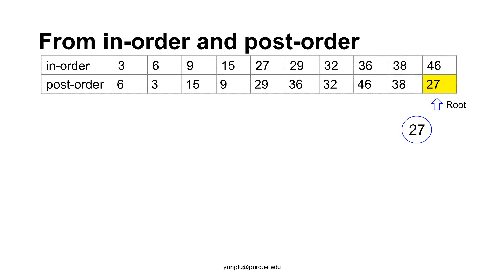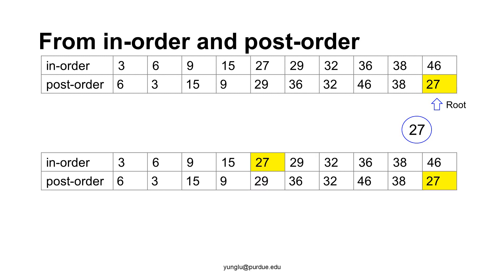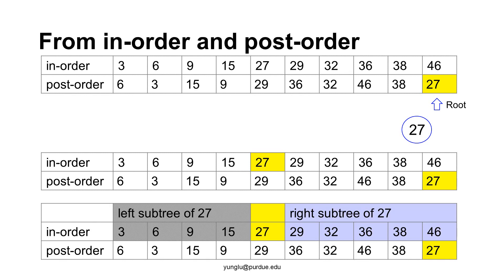From the root 27, we can go to the in-order traversal and locate the root, 27. Next, we divide the nodes of the in-order traversal into the left subtree of 27 and the right subtree of 27. We know that 3, 6, 9, 15 belong to the left subtree of 27. And 29, 32, 36, 38, 46 belong to the right subtree of 27.